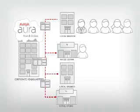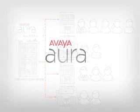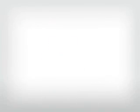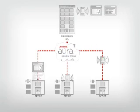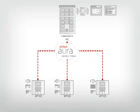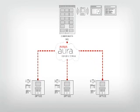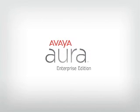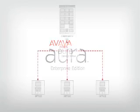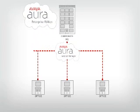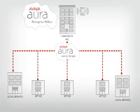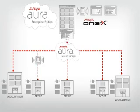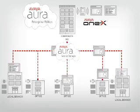Avaya Aura Branch Edition is designed to meet the needs of customer-facing branches. Avaya Aura Standard Edition meets the needs of single-site deployments and mid-to-large enterprises requiring standard survivability. Avaya Aura Enterprise Edition offers all of the capabilities of the Standard Edition plus enterprise-wide succession management, and also includes all of our Avaya 1X applications for unified communications.